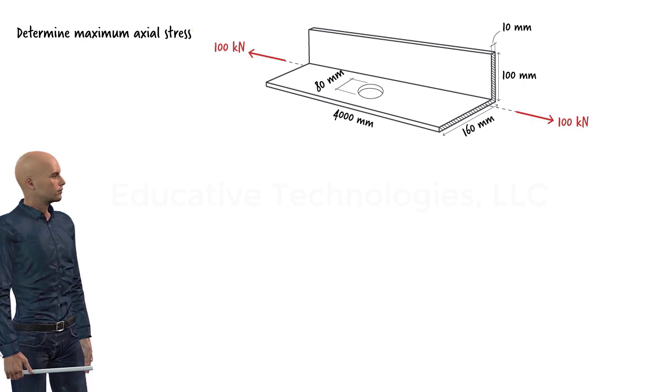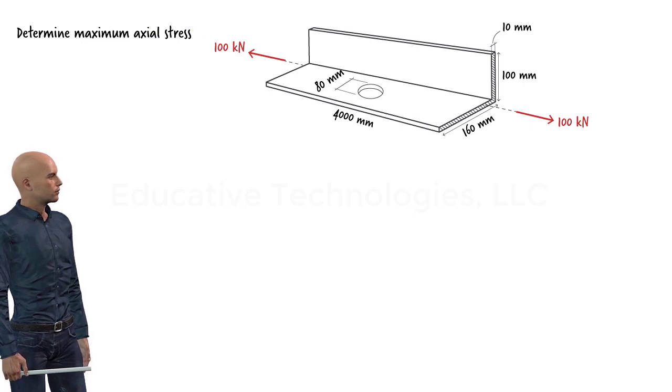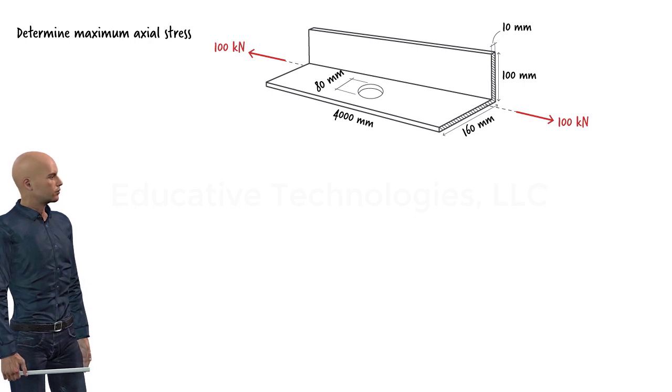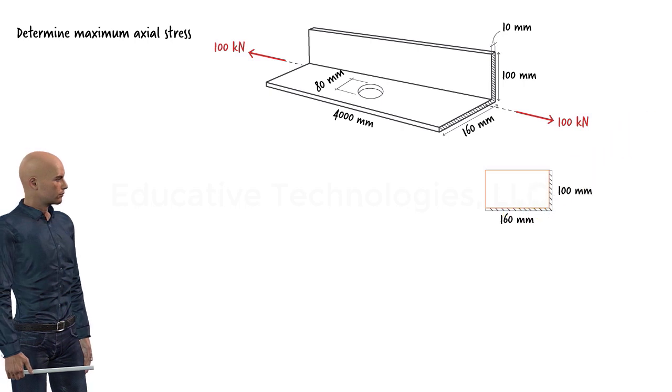To solve the problem, we need to divide the axial force by the minimum cross sectional area of the member. This area can be calculated by subtracting the area due to the hole from the gross cross sectional area. The gross cross sectional area of the member can be expressed as shown here.